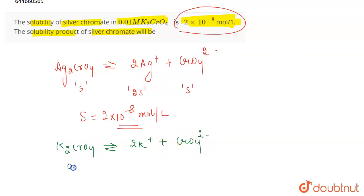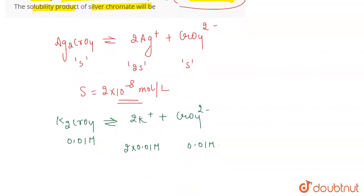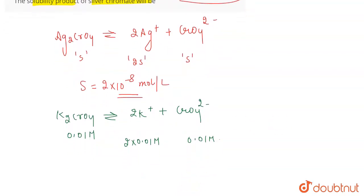Since K₂CrO₄ is 0.01 molar, when it dissociates it gives 2 moles of K⁺, so the concentration of K⁺ is 2 × 0.01, and the concentration of CrO₄²⁻ from K₂CrO₄ will be 0.01 molar. We need to find the solubility product of Ag₂CrO₄.